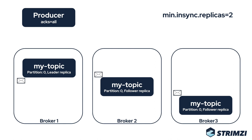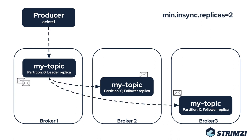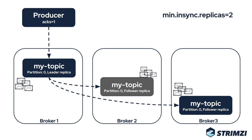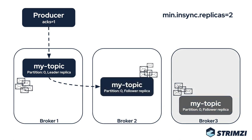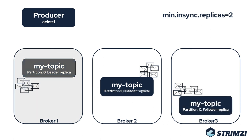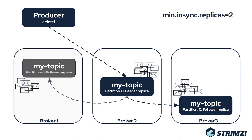When the Strimzi operator does the rolling update, it will roll the brokers one by one. It will restart one broker, wait until it starts again and resyncs all the messages it missed. And only once the replicas are back in sync, it will move to the next broker. That way, the topics should be always available even when rolling out new changes to your brokers, and your Kafka client applications should be able to work without any interruptions.